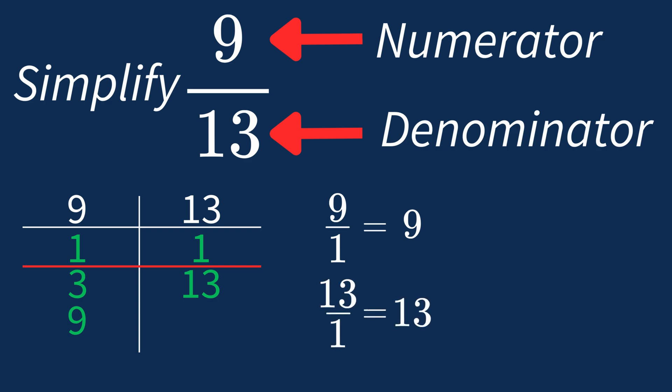So after dividing both the numerator and denominator by their greatest common factor of 1, we end up with the same fraction, 9 over 13. This shows us that 9 over 13 is already in its simplest form.